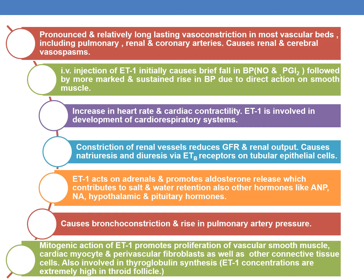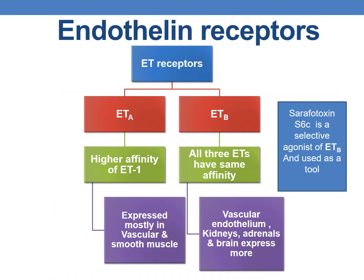Endothelins are also involved in thyroglobulin synthesis, and ET1 concentrations are extremely high in thyroid follicles. Regarding receptors, there are two main types: ETA and ETB, both G protein coupled receptors. ETA has higher affinity for ET1, whereas ETB has equal affinity for all three ETs — ET1, ET2, and ET3.